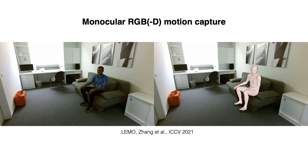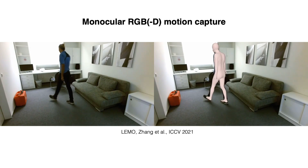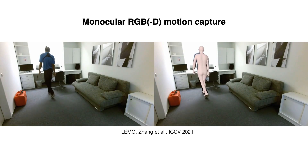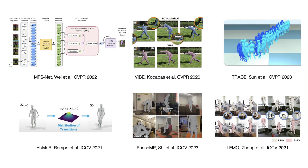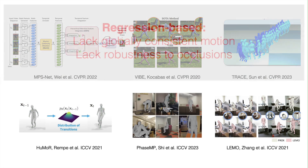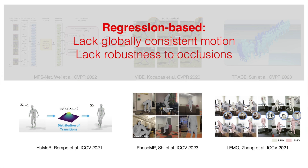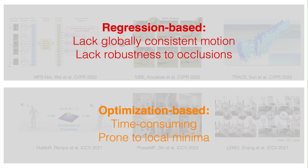3D human motion reconstruction from a monocular video has been extensively studied in the community. However, existing works still encounter many problems. Regression-based methods mostly do not reconstruct motions in the global space and struggle with body occlusions. Optimization-based methods are time-consuming and prone to local minima.